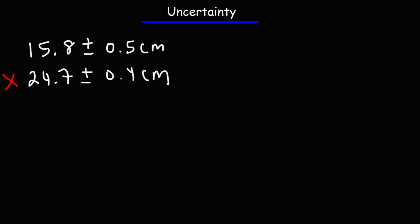So what we're going to do in this example is we're going to multiply these two numbers. So how can we do this? Well, before you multiply, you need to get the percent uncertainty. So we need to take the estimated uncertainty divided by the measured value and multiply it by 100%. So we're going to change the operation. So if we take 0.5 divided by 15.8 and then multiply that by 100%, that will give us the percent uncertainty, which is 3.1646%.